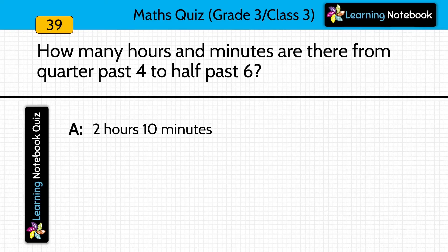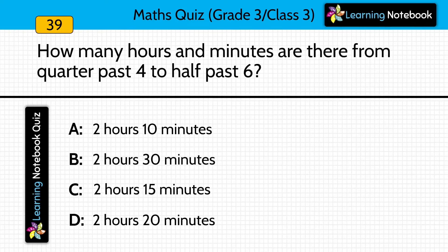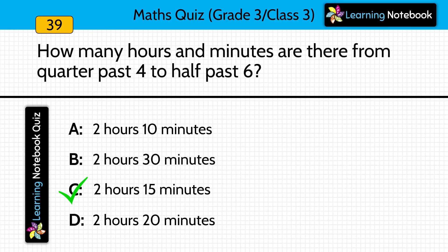How many hours and minutes are there from quarter past 4 to half past 6? Answer is 2 hours 15 minutes. Quarter past 4 means 4:15 and half past 6 means 6:30, so there are 2 hours 15 minutes between them.